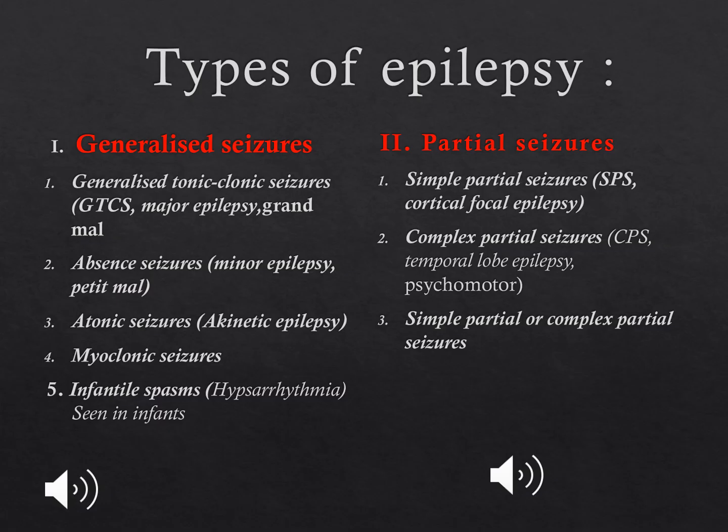Coming to the types of epilepsy, there are two types: generalized seizures and partial seizures. Generalized seizures are again subclassified into various types. The first one is generalized tonic-clonic seizures, also called major epilepsy or grand mal epilepsy, and this is the commonest type of epilepsy, lasting for one to two minutes.